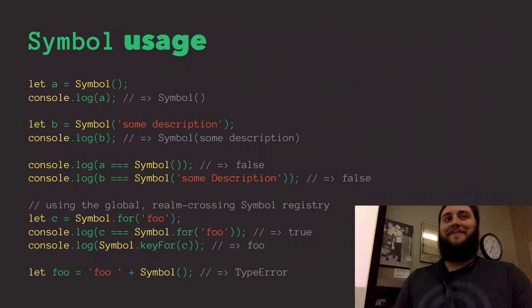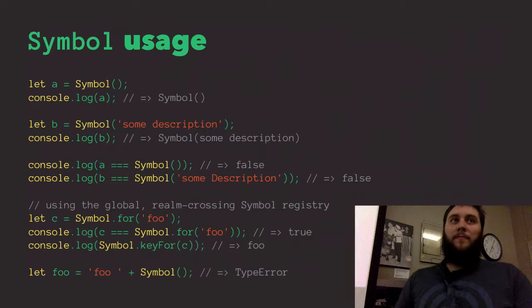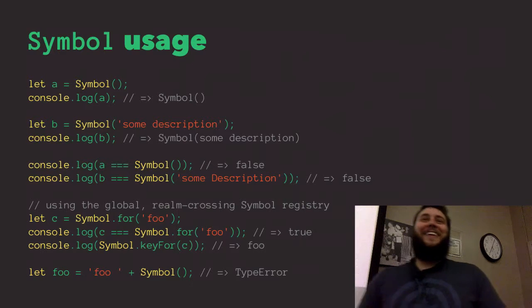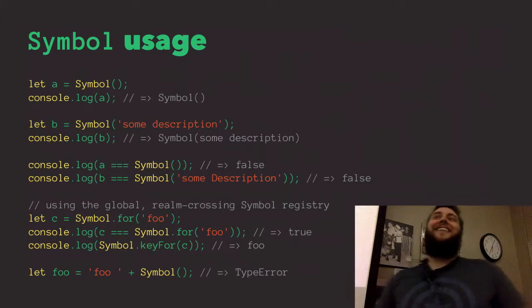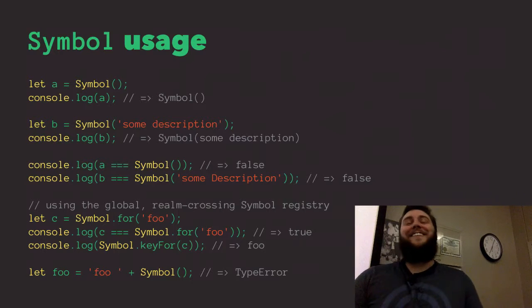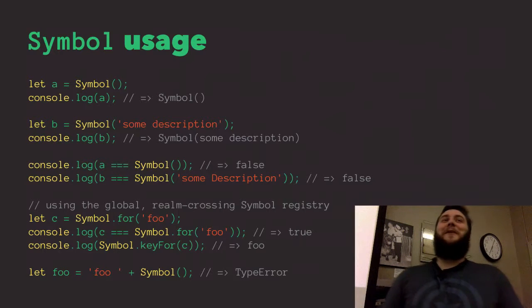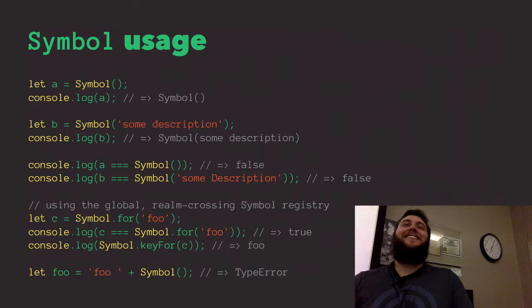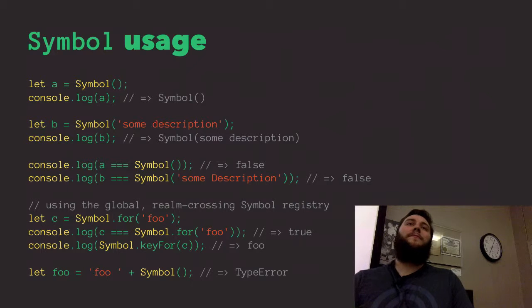Is there a compelling reason not to use the new keyword with symbols? Yes, because it'll throw a TypeError. Why does it throw a TypeError? Because it's a primitive, not an object — and all objects use new, primitives don't. So symbols are primitives.